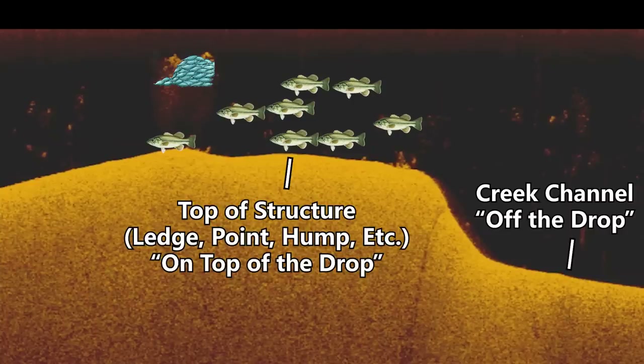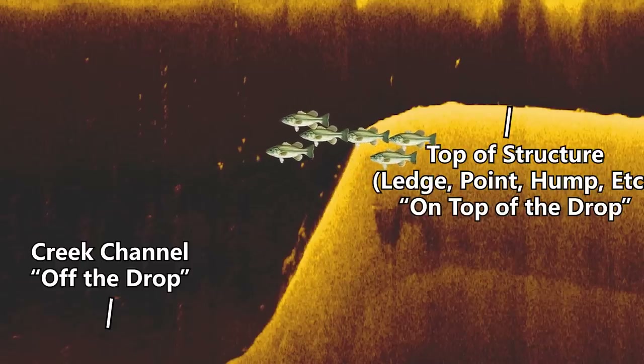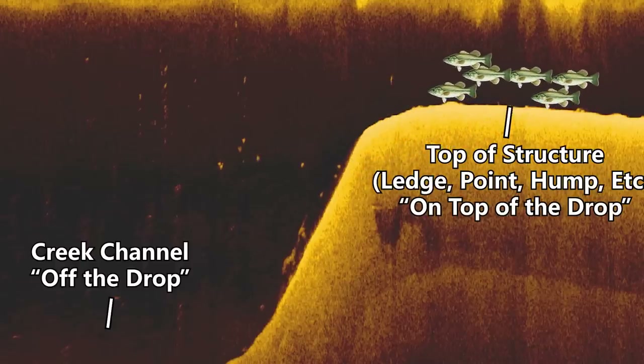Fish suspended over the middle of the channel or off the side of the drop are not as likely to feed — they're basically just resting. A lot of times bass will chill over the middle of the channel or off the end of these drops for maybe 10 to 15 hours of the day, and only be in those active feeding positions for 5 to 10 hours — sometimes as little as an hour or two all day. Timing is a big key in offshore fishing, and you can tell when the timing is right by looking for fish that are on top of the drops versus over the creek channel or off the sides.